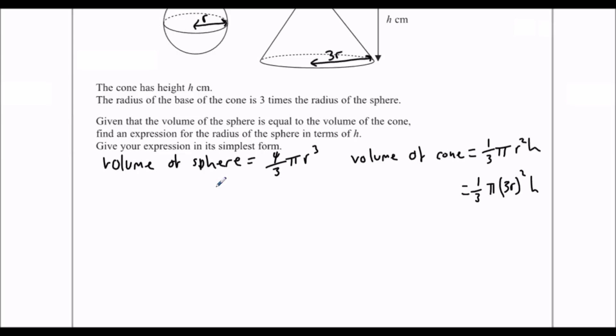So then we just have to simplify. We know they're equal, so let's make them equal. 4 over 3 π r cubed equals 1 over 3 π times 3r squared, all squared, times h. What we're trying to do is get an expression for the radius in terms of h, so r equals something h. We just need to simplify this.